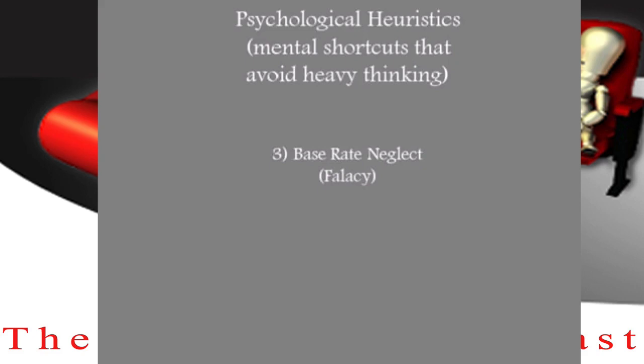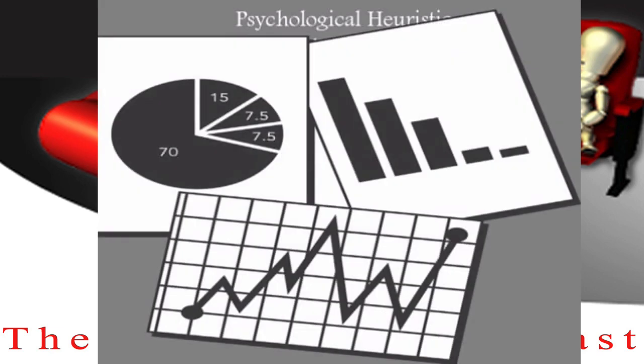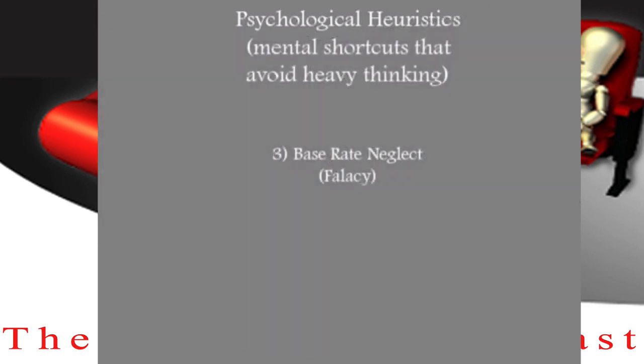Here's an example to show the difference. They've done studies where they give people a piece of information: in this particular college, the average GPA is 3.0 with a 0.3 standard deviation, which means almost 67% are between 2.7 and 3.3 — if you remember the bell curve and all that. That's the data you're given.